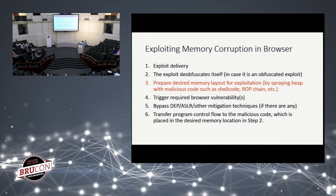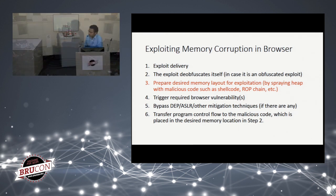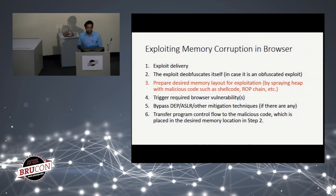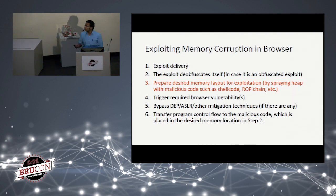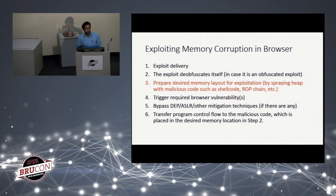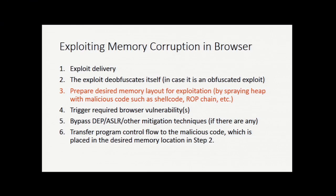At a high level, the exploit lifecycle consists of: exploit delivery into the browser, then de-obfuscation — attackers usually obfuscate the exploit in many ways. After de-obfuscation, the exploit prepares the desired memory layout using heap spraying. Next is triggering the vulnerability: the attacker hijacks the control flow of the normal program and redirects it to malicious code. In modern browsers, there are security mitigations like DEP and ASLR that the attacker must also address.